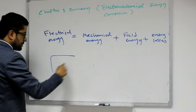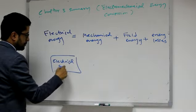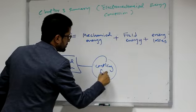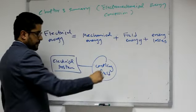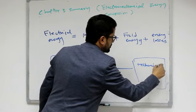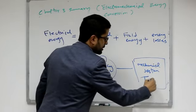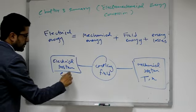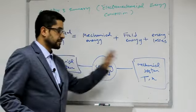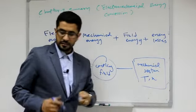As a functional flux diagram, we have an electrical system connected through a coupling field to a mechanical system. The mechanical system is physically translated to torque and speed, while the electrical system is physically translated to voltage and current. The coupling field exists in both directions — transferring from electrical energy to mechanical energy and vice versa.